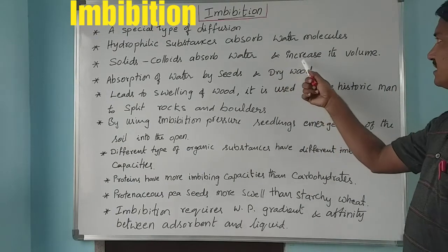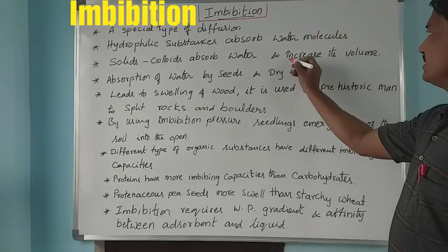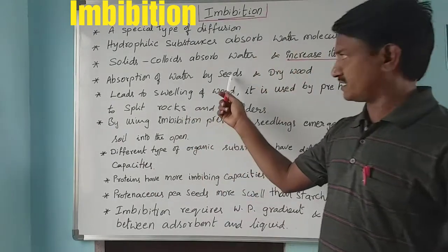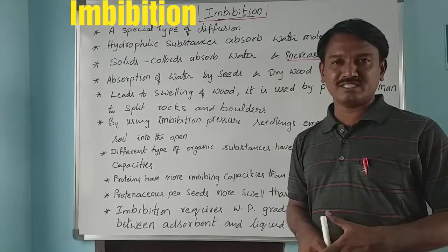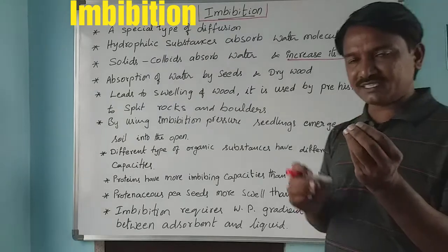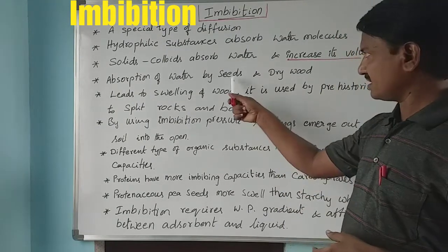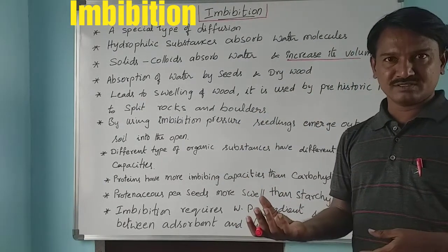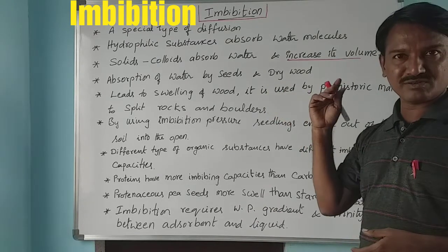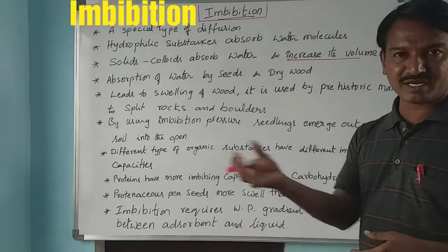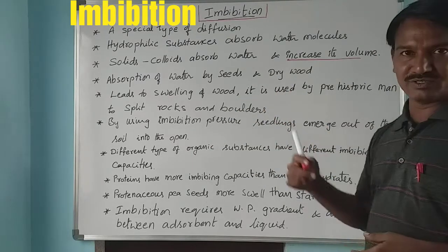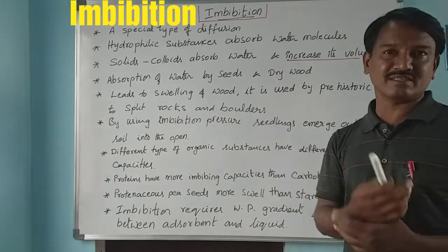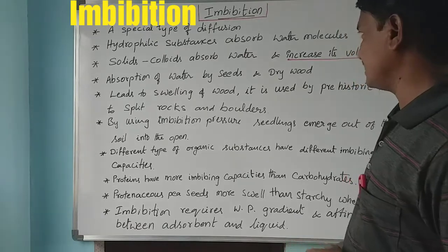The best examples of imbibition are dry seeds and dry wood. Dry seeds contain a little amount of water molecules, and dry wood contains no water. So the concentration gradient between water and the seeds or dry wood is high. Imbibition depends on concentration gradient.